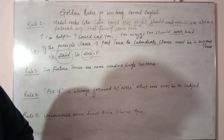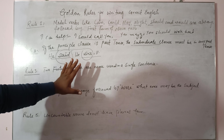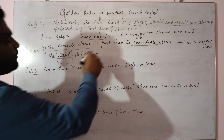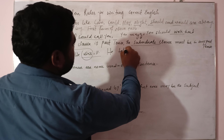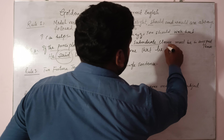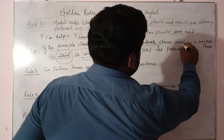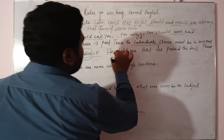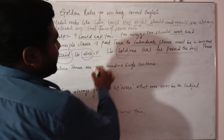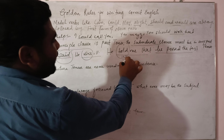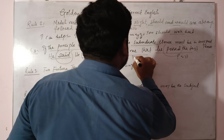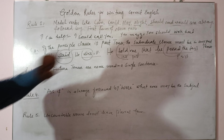For example: 'The teacher told the boys that he might go to Lahore.' Ya: 'He told me that he passed the test.' Yahan principal clause hai aur yeh subordinate clause hai. Maine 'told' istemal kiya — jo 'tell' ka past form hai — aur subordinate clause bhi past tense mein hai. So this is the rule of English.